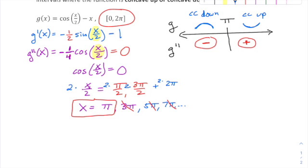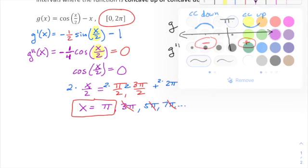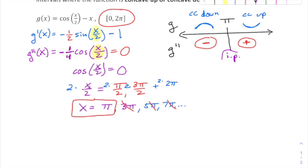Okay, so I said ask for the coordinates of the inflection points. So we've got to go back to the original, get that y coordinate. So I'm going to do g of pi. I'm plugging back into the original, and that would be cosine of pi over 2 minus pi. Cosine of pi over 2 is zero. So zero minus pi is negative pi.